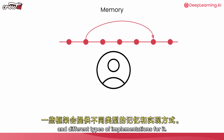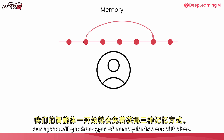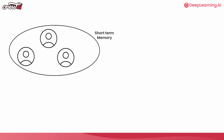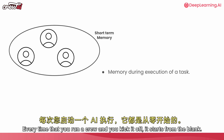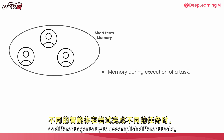Some frameworks offer different types of memory and different implementations. In the case of CrewAI, our agents get three types of memory for free out of the box: long-term memory, short-term memory, and entity memory. Short-term memory is memory that lives only during the crew execution — every time you run a crew and kick it off, it starts from blank.